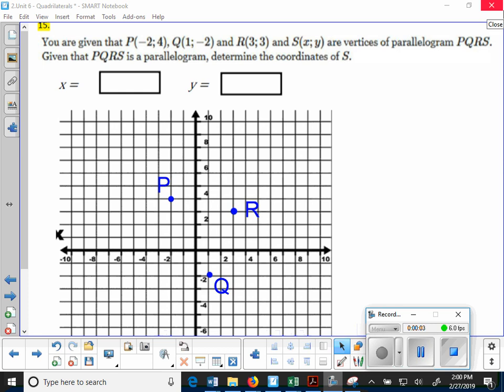All right, so for this problem here, it gives us three vertices of a parallelogram. When we did this earlier, we said okay, we know these three, we need to find S.